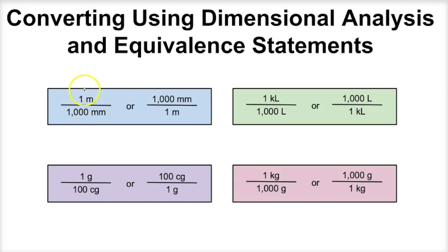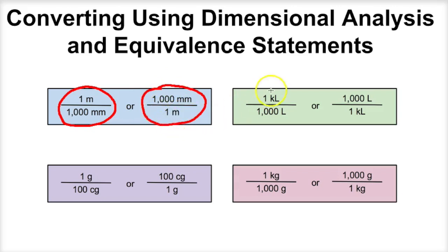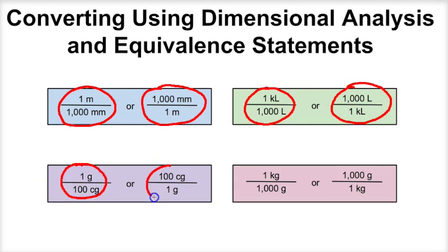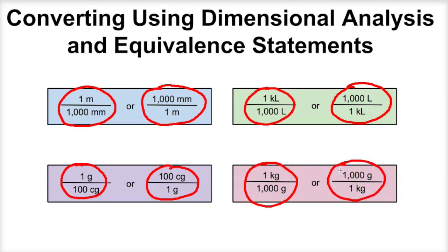So what we're looking at right now are several different equivalent statements. For example, we know that one meter is the same thing as 1,000 millimeters, and if we flip this equivalent statement around, we can also say that 1,000 millimeters equals one meter. We know that one kiloliter is 1,000 liters. We know one gram is a hundred centigrams. We know that one kilogram is 1,000 grams. We could use these different equivalent statements to solve metric unit conversions using dimensional analysis.